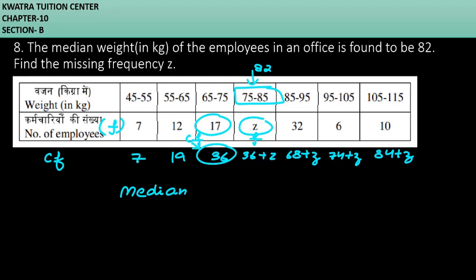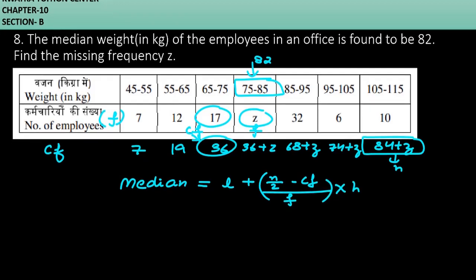The f value we know, the CF value is 36. The total number is 84 plus Z divided by 2 minus CF. CF is 36 in this case. So it will be n by 2 minus CF over f into h. The median value is 82, the lower limit is 75.